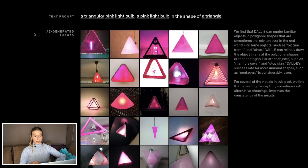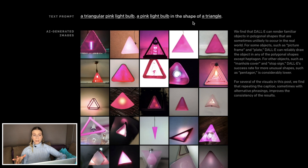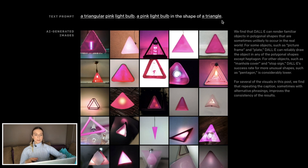So this is how it works. We have a text prompt — in this case it's 'a triangular pink light bulb, a pink light bulb in the shape of a triangle.' This second sentence is added to make sure that DALL-E will come up with the best result. By the way, we are not able to test the model ourselves and see its potential limitations, shortcomings, and how brittle it is. OpenAI probably very carefully chose the type of sentences and objects that work well, so the text prompts are pretty limited, but still they give us a lot of freedom to have fun with.